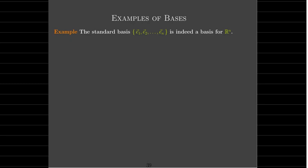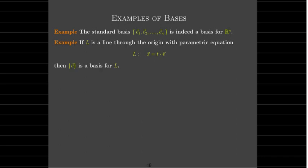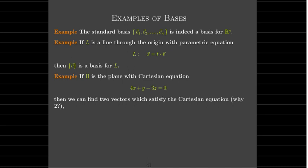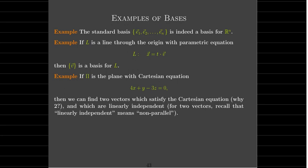Some examples: the standard basis vectors — we've been using that term — is indeed a basis for R^n. A line through the origin, whether it's in R2 or R3, the direction vector forms a basis for the line. If you have a plane in R3 and we'd like to find a basis, we just need to find two vectors. Why two vectors? It's a two-dimensional object — you need two vectors to generate the plane. We need them to be linearly independent to be basis vectors, and linearly independent for two vectors means they're non-parallel.